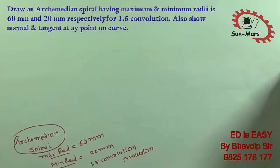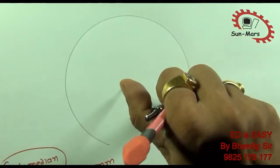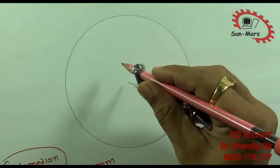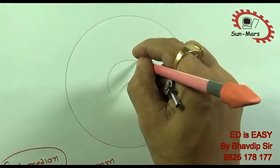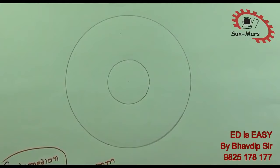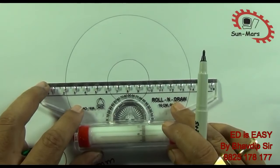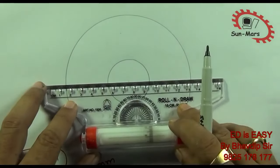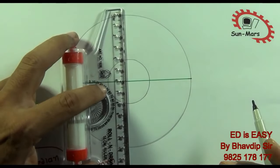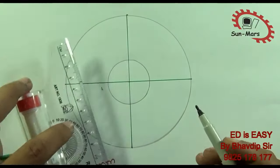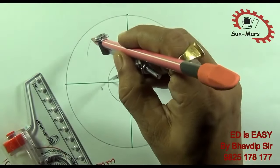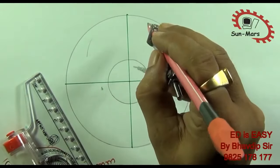Now let's look at the step-by-step Archimedean Spiral construction. First of all, you have to make a circle of radius 60. The minimum radius is 20, so you also make a circle of radius 20. For 1.5 convolutions, we make a circle of 8 segments.